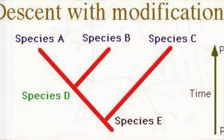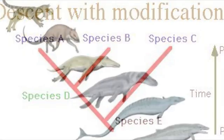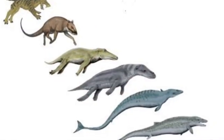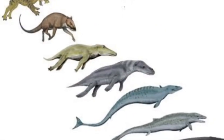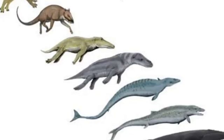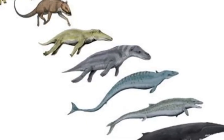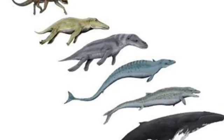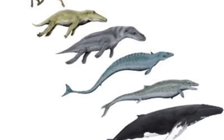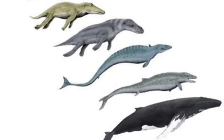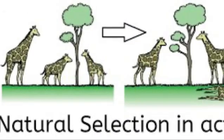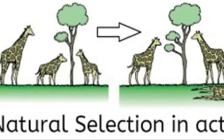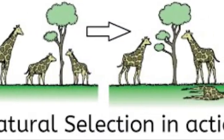He called his theory descent with modification, and today we primarily refer to that as the theory of evolution. What made Darwin so special was that he not only thought of this idea but also explained how it could be happening. Darwin had a mechanism for how evolution could occur — how species could change over time — and he called that mechanism natural selection.